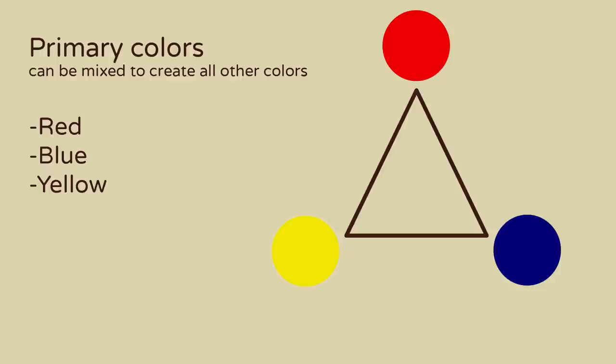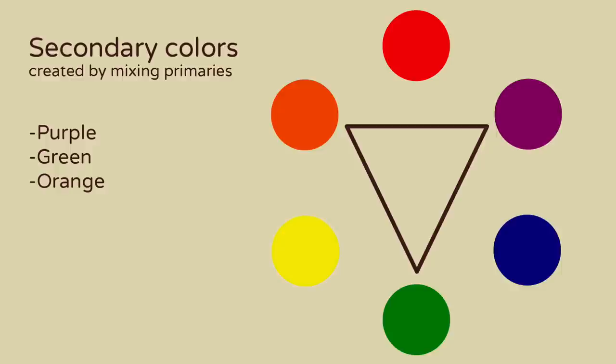All you need to start are the three primary colors: red, blue, and yellow. All other colors can be created by mixing these in different ways. Note that mixing all three together will make a muddy brown.